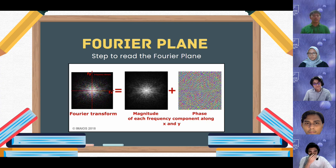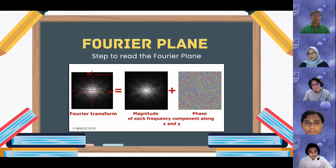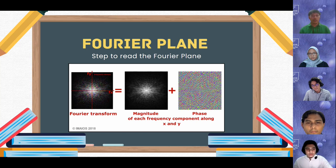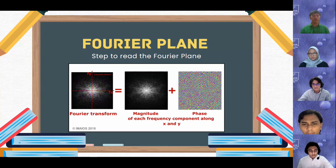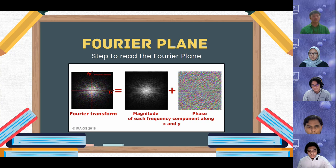I will explain about the Fourier plane. There are several steps to read Fourier planes. First, the spatial frequencies are represented by the horizontal and vertical axes respectively. Second, the amplitude or magnitude of the frequency component is represented by the pixel intensity. I will now pass to our last presenter, Ahmed, to conclude the whole presentation.